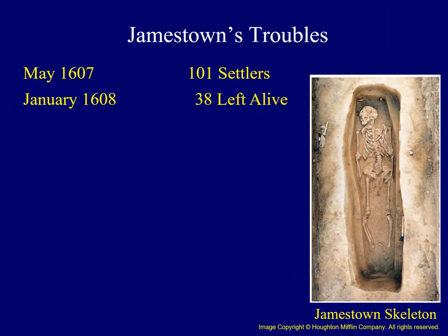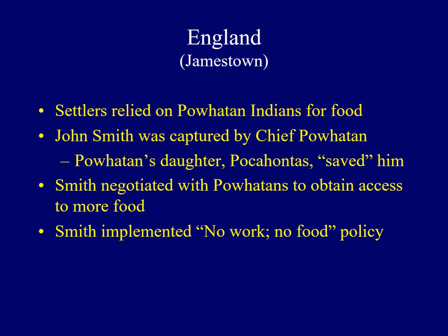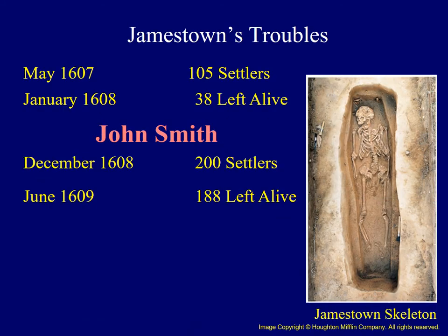Some statistics demonstrate the lack of success in the colony's first year. In May of 1607, 101 settlers arrived in Jamestown. When relief ships arrived the following January, only 38 remained alive. Smith later inherited a leadership position and established a trade network with the Powhatans to ensure access to food and other supplies. He also implemented a new policy unpopular among many inhabitants. Under Smith's leadership, there was a much higher survival rate — at the start of winter 1608, 200 settlers were living in Jamestown, and by the following spring, only 12 had died.